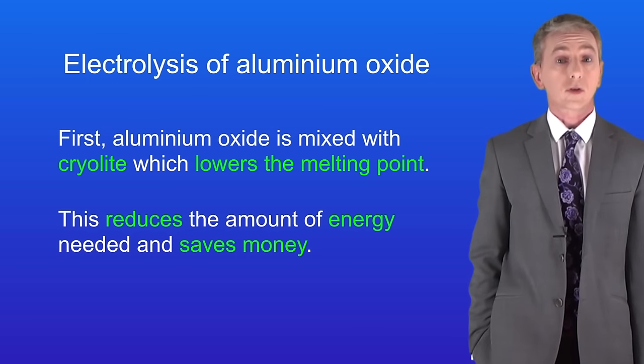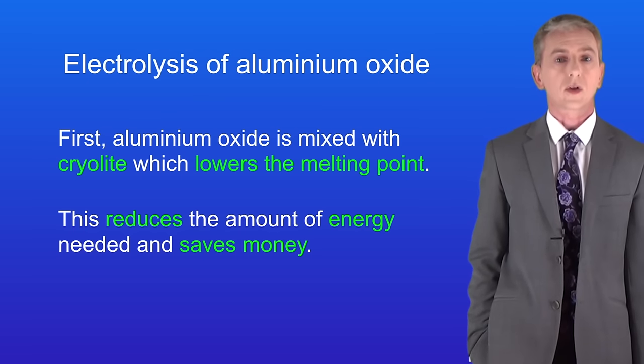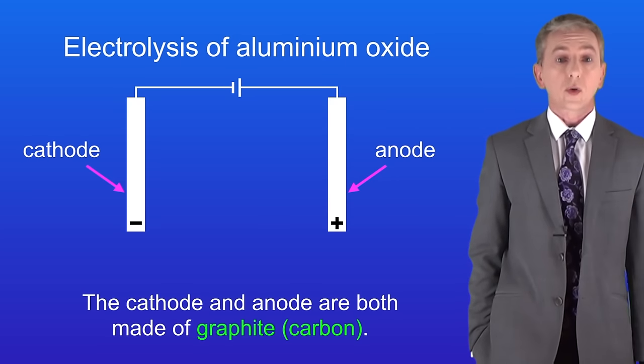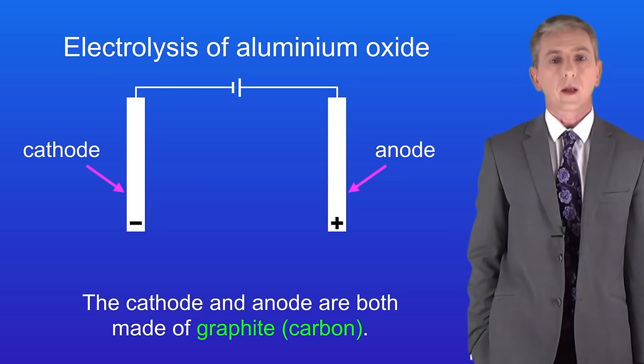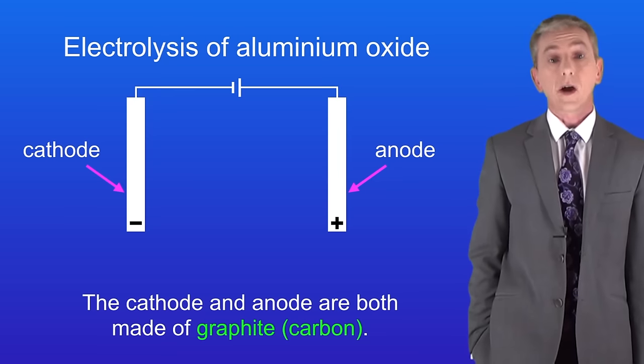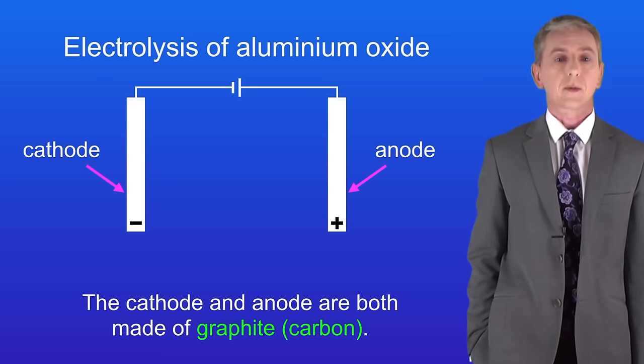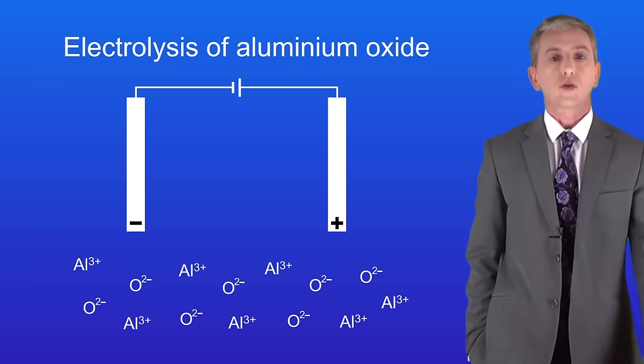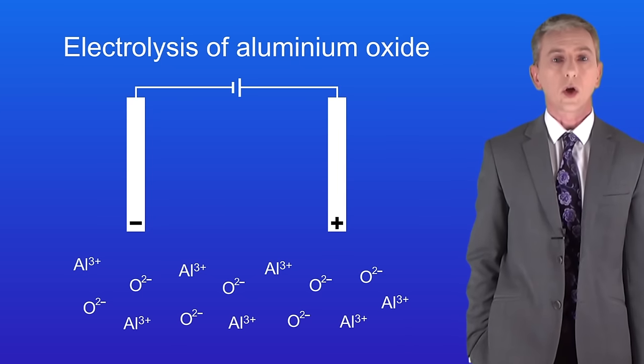Now we apply an electric current to the molten aluminium oxide. I'm showing you the setup here. The cathode and the anode are made of graphite and that's a form of carbon. Graphite is a very good conductor of electricity and it's got a very high melting point so we can use it at high temperatures without melting.